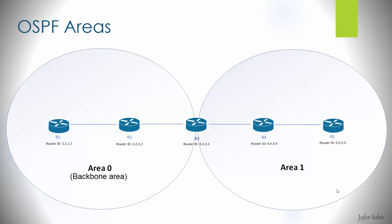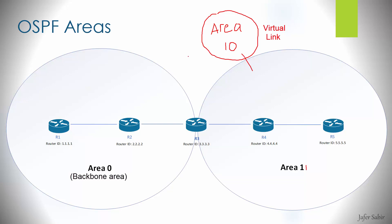There is an exception — a temporary workaround — known as a virtual link. This is used when you cannot join an area directly to Area 0, perhaps because it can only connect to another area. As a temporary fix, you can use a virtual link to join, say, Area 10 to Area 11 while you redesign your areas. A real-world example is when Area 10 and Area 11 are two offices next to each other, but Area 0 is across a slow WAN link to another city.